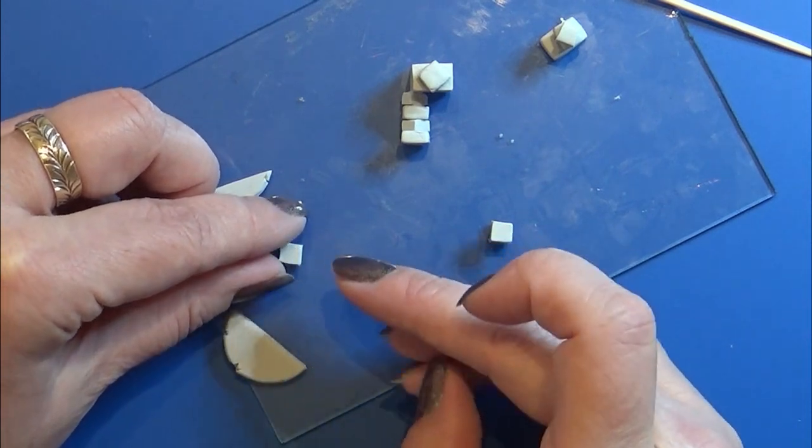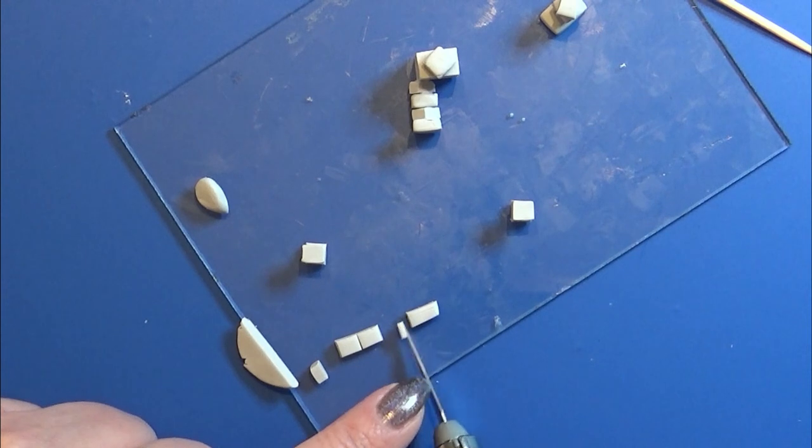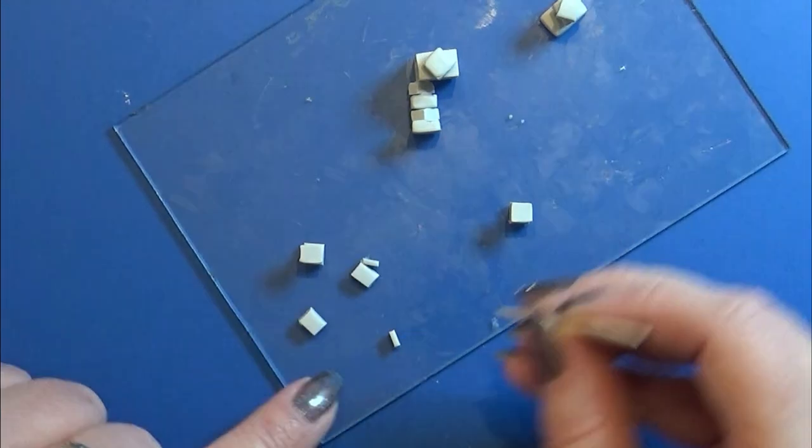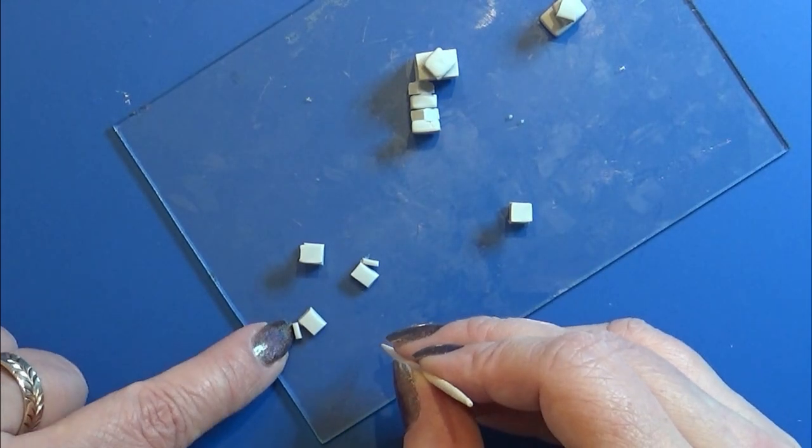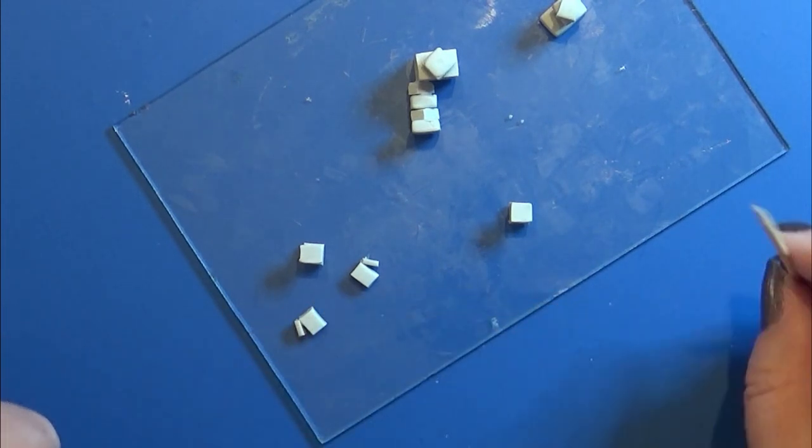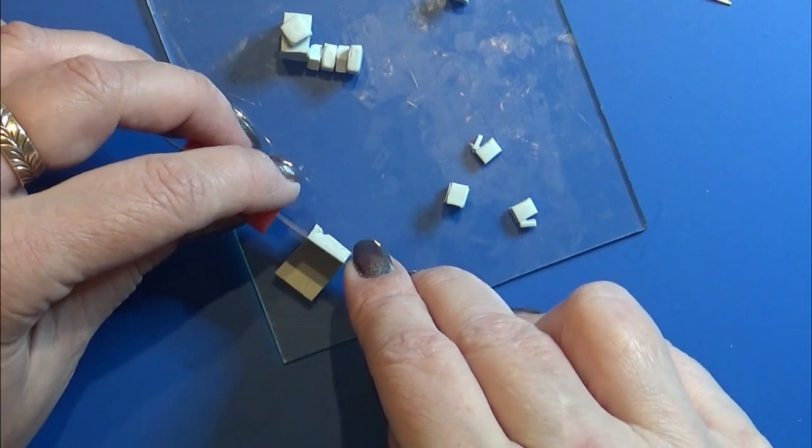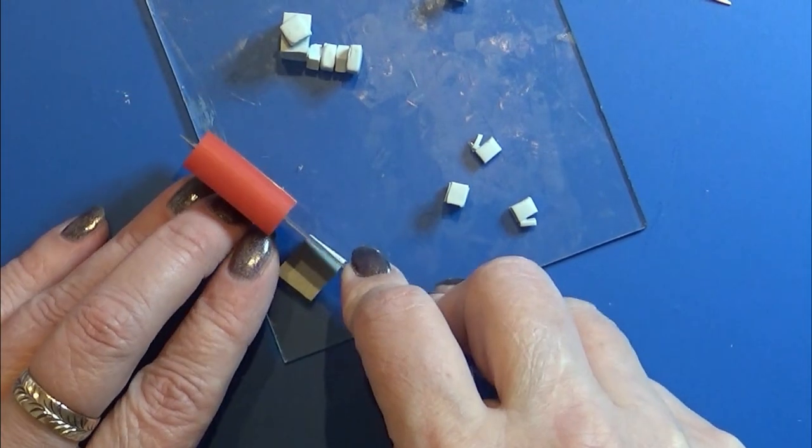Then I'm going to work on the hands, and for that I cut out two squares and two tiny pieces. Using a tiny bit of bacon bond, I'm going to glue the small piece on the bigger piece, and I'm going to mirror them so I have two small hands.